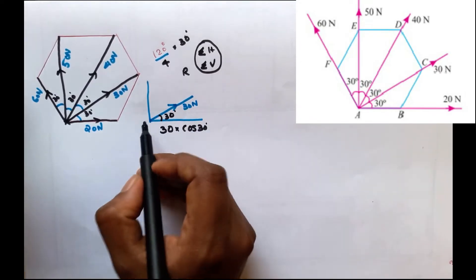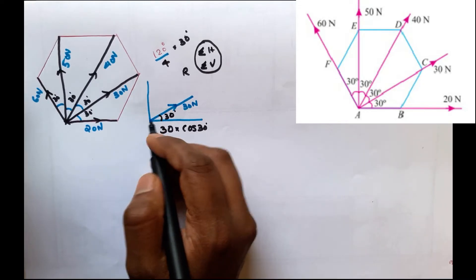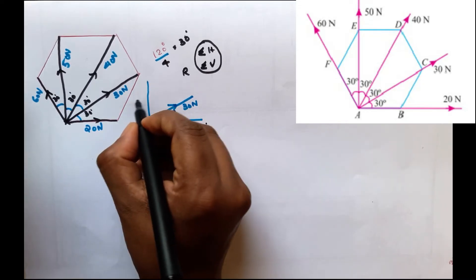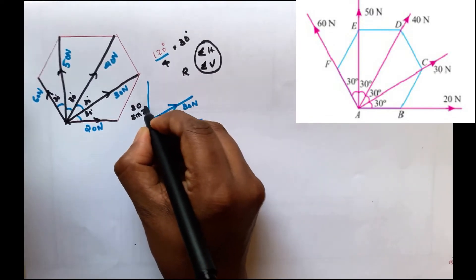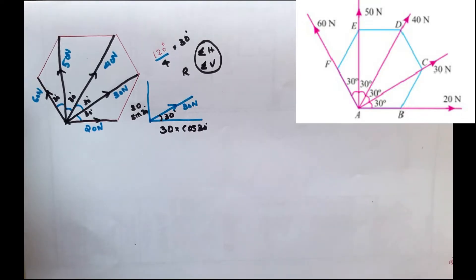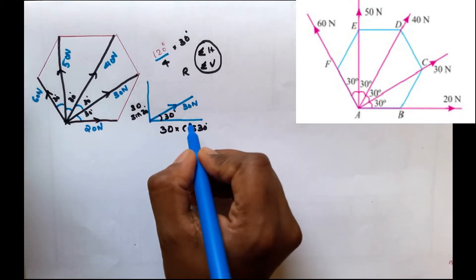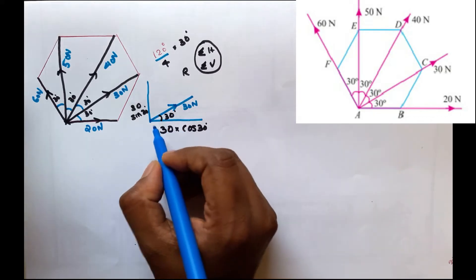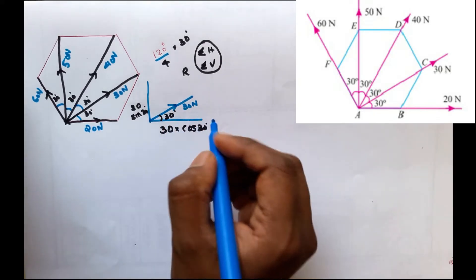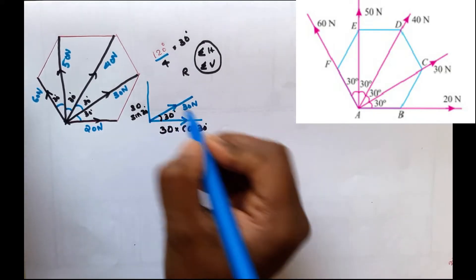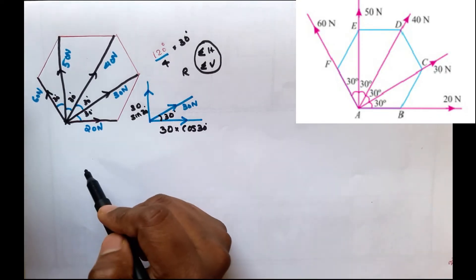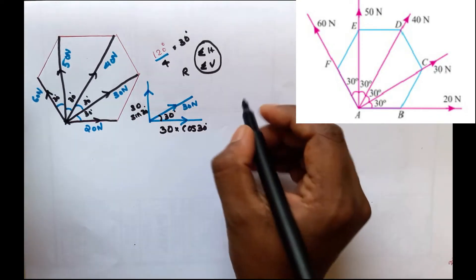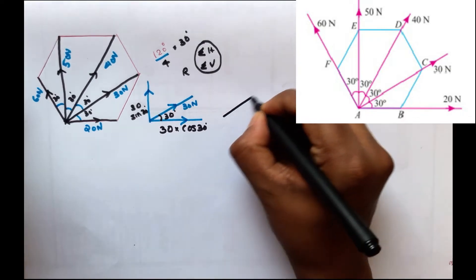The vertical component is sine — it is 30 sin 30. Now we resolve the next force. This is the 40N force, which acts in both the horizontal and vertical directions.